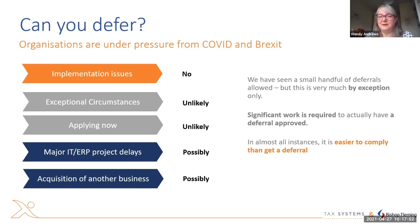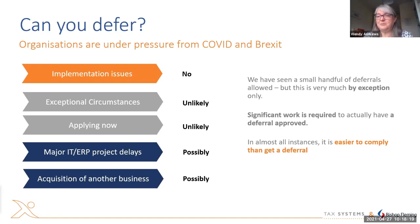Businesses who are going to be able to defer will be quite narrowly defined and you do have to actually engage with HMRC and get their agreement to a deferral. It's unlikely that they will agree to a deferral just because it's difficult to implement. Generally speaking HMRC are relatively sympathetic to businesses, especially those that have been badly hit by COVID. So it may be appropriate to engage with HMRC if there are some exceptional circumstances in your business, but the critical thing is that you engage with them as soon as possible.